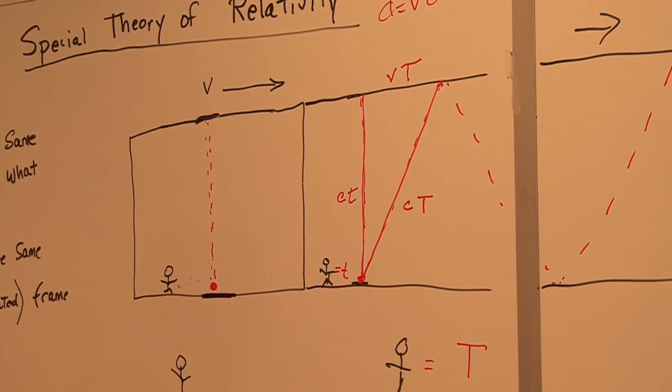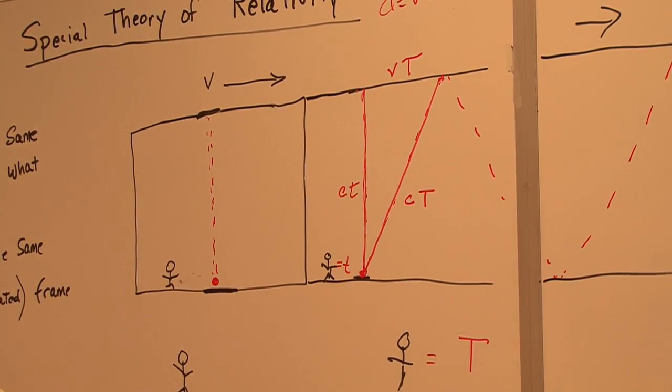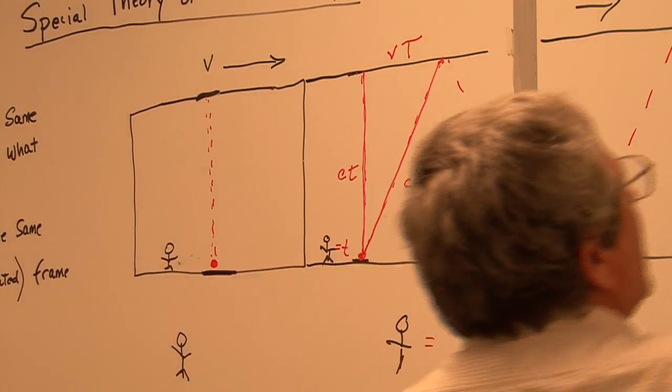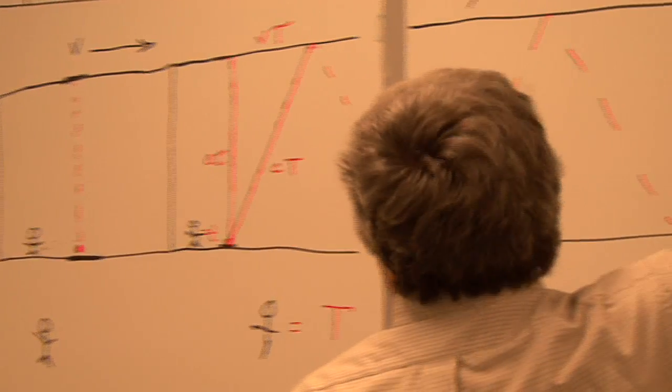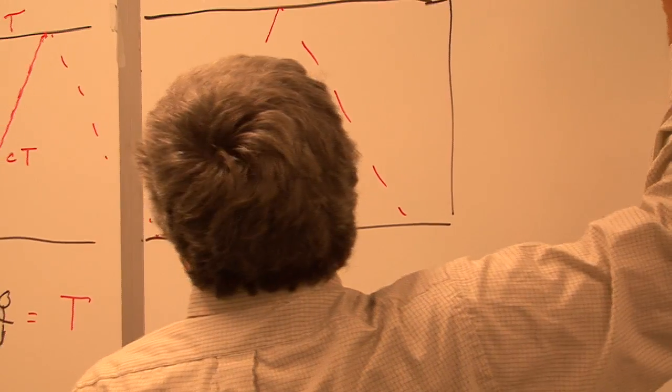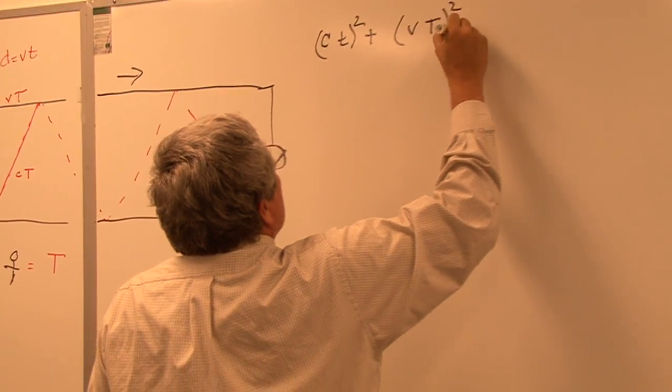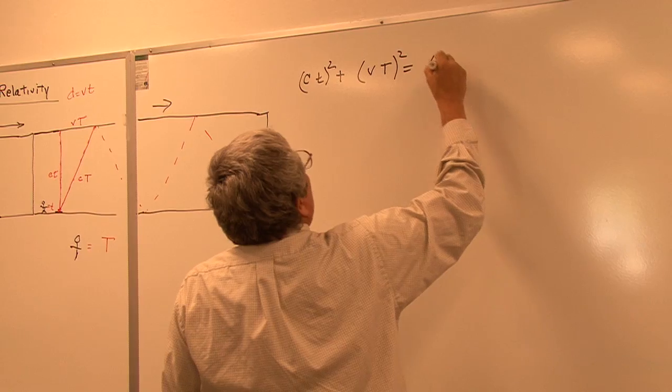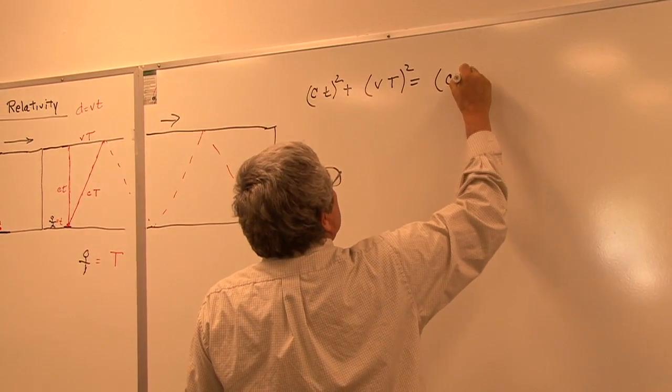So we get our legs, and then all we do is we're going to create the Pythagorean theorem here. So we're going to go ct squared plus v capital T squared equals c capital T squared.